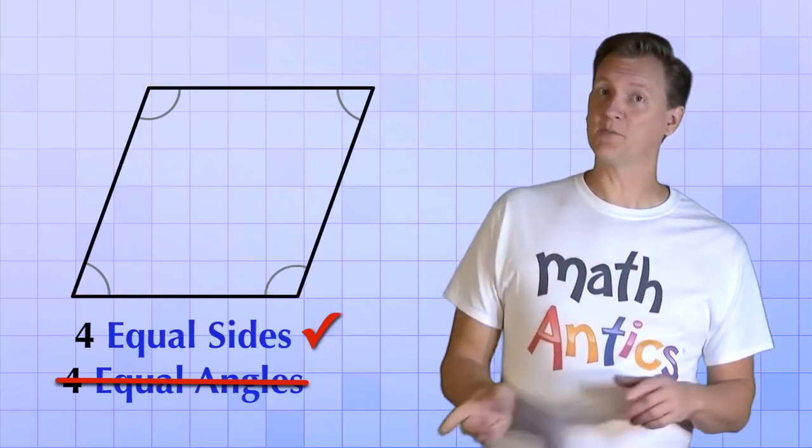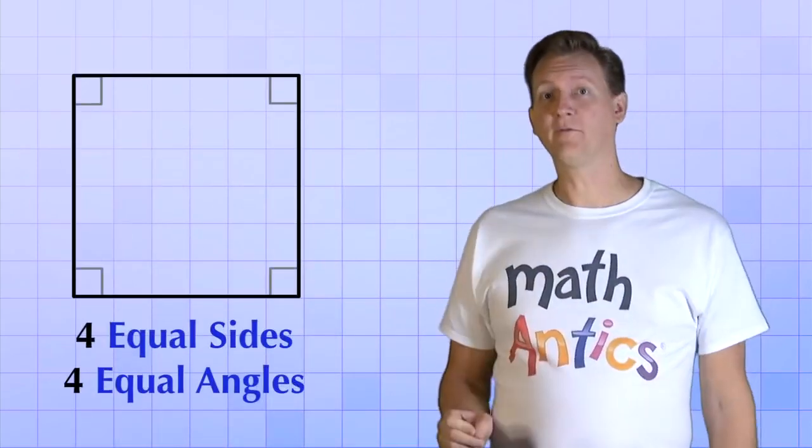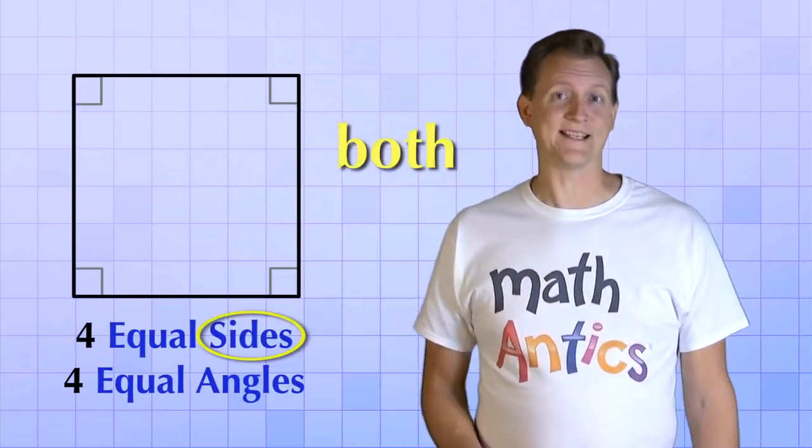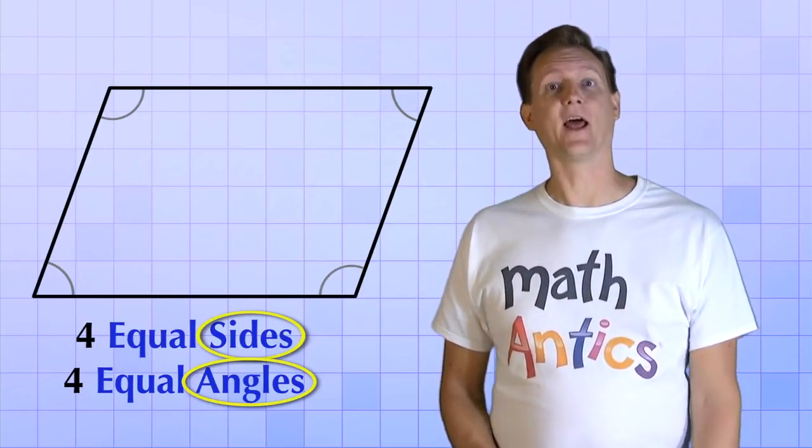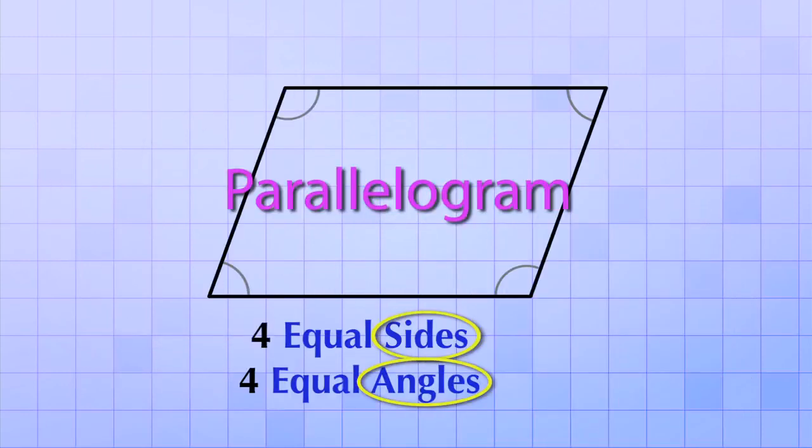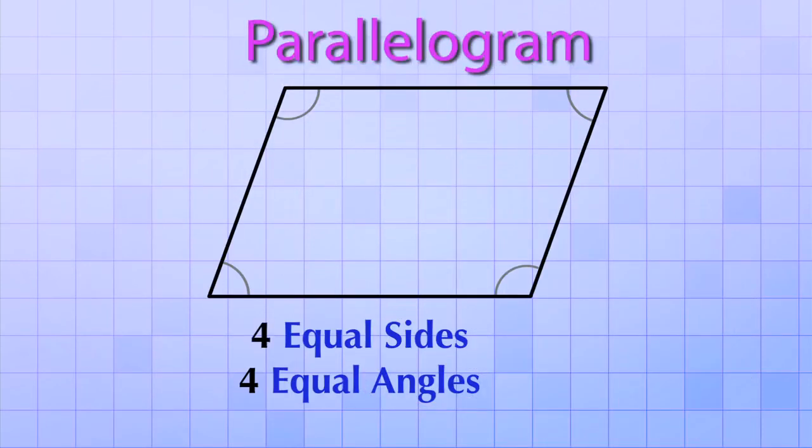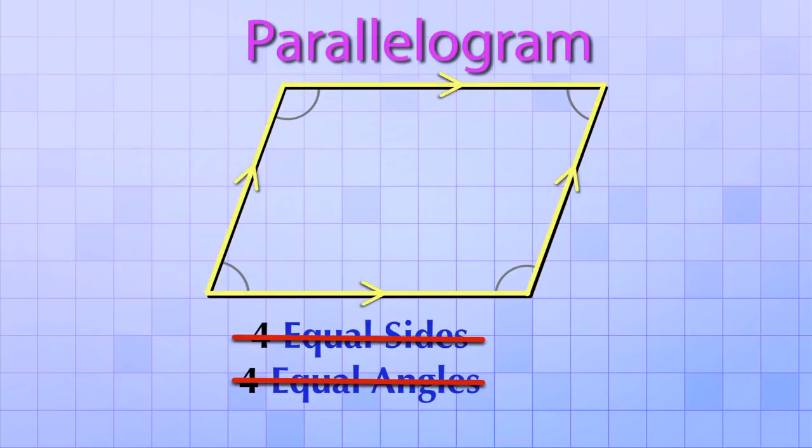Okay, going back once more to our square, what if we try changing both the sides and the angles? Here's what we end up with, and we call it a parallelogram. It's called a parallelogram because even though its sides are not all equal and its angles are not all equal, it's still made from two pairs of parallel sides. Get it? Parallel, parallelogram.